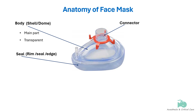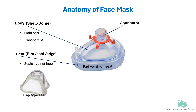The seal, rim, flap, or edge is the part of the mask that comes in contact with the face. There are two types: pad type and flap type. The pad or cushion type seal is inflated with air or filled with a material that will conform to the face when pressure is applied. The flap type seal is a flexible extension of the body that conforms to the contour of the face and is pressed onto the face to create a seal.